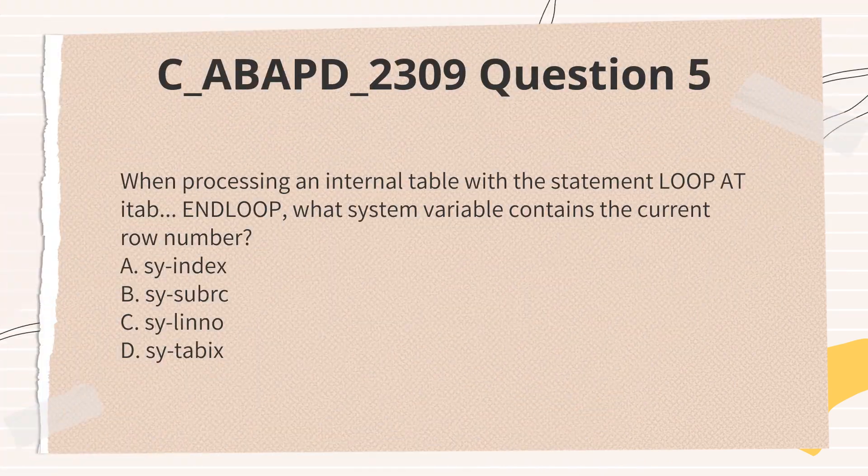When processing an internal table with the statement LOOP AT ITAB ENDLOOP, what system variable contains the current row number?